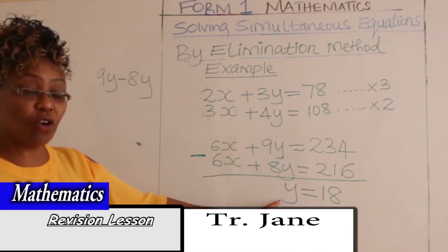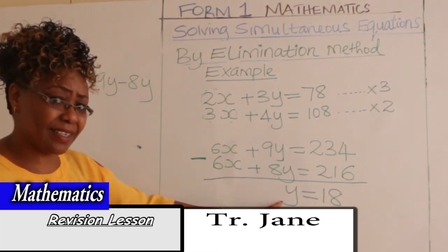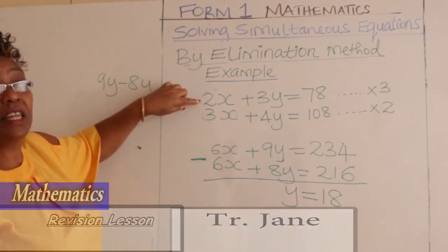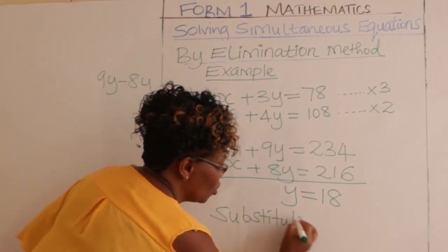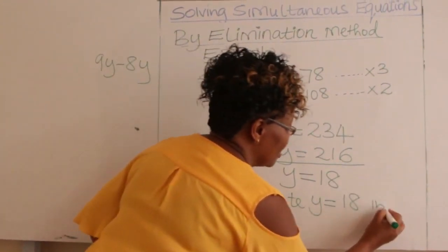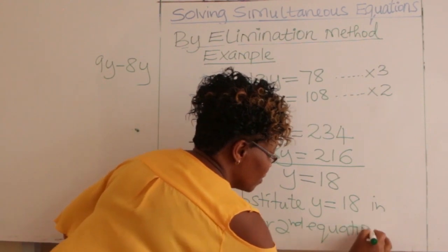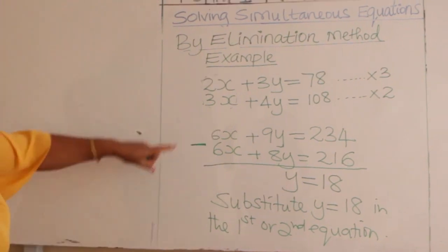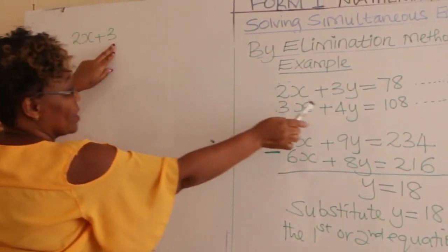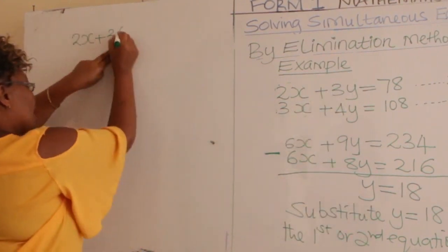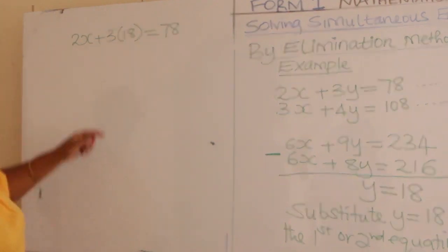Now that we have the value of y, we need to find x. We take y equals 18 and substitute it into either the first or the second original equation. Let's take the first equation: 2x plus 3y equals 78.